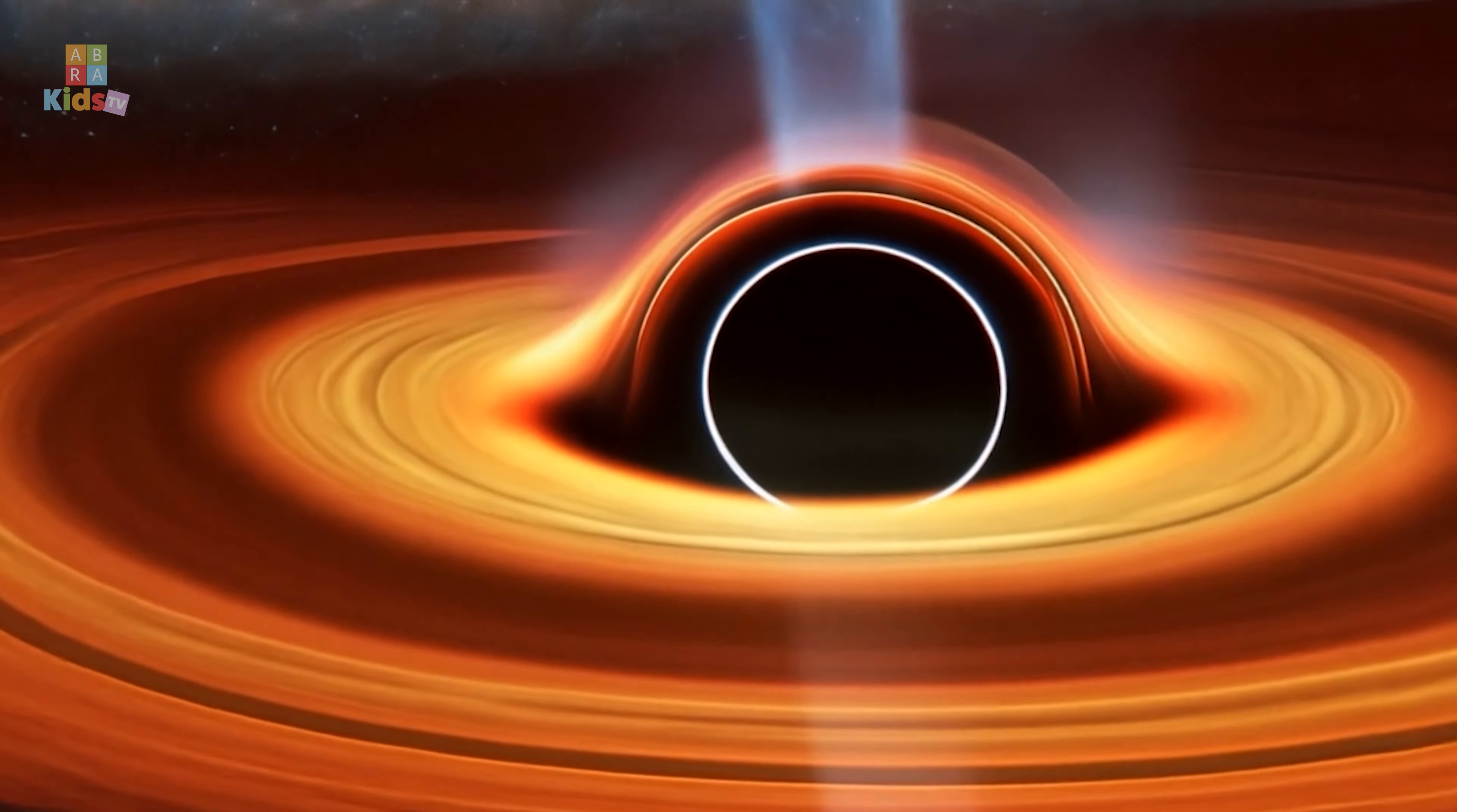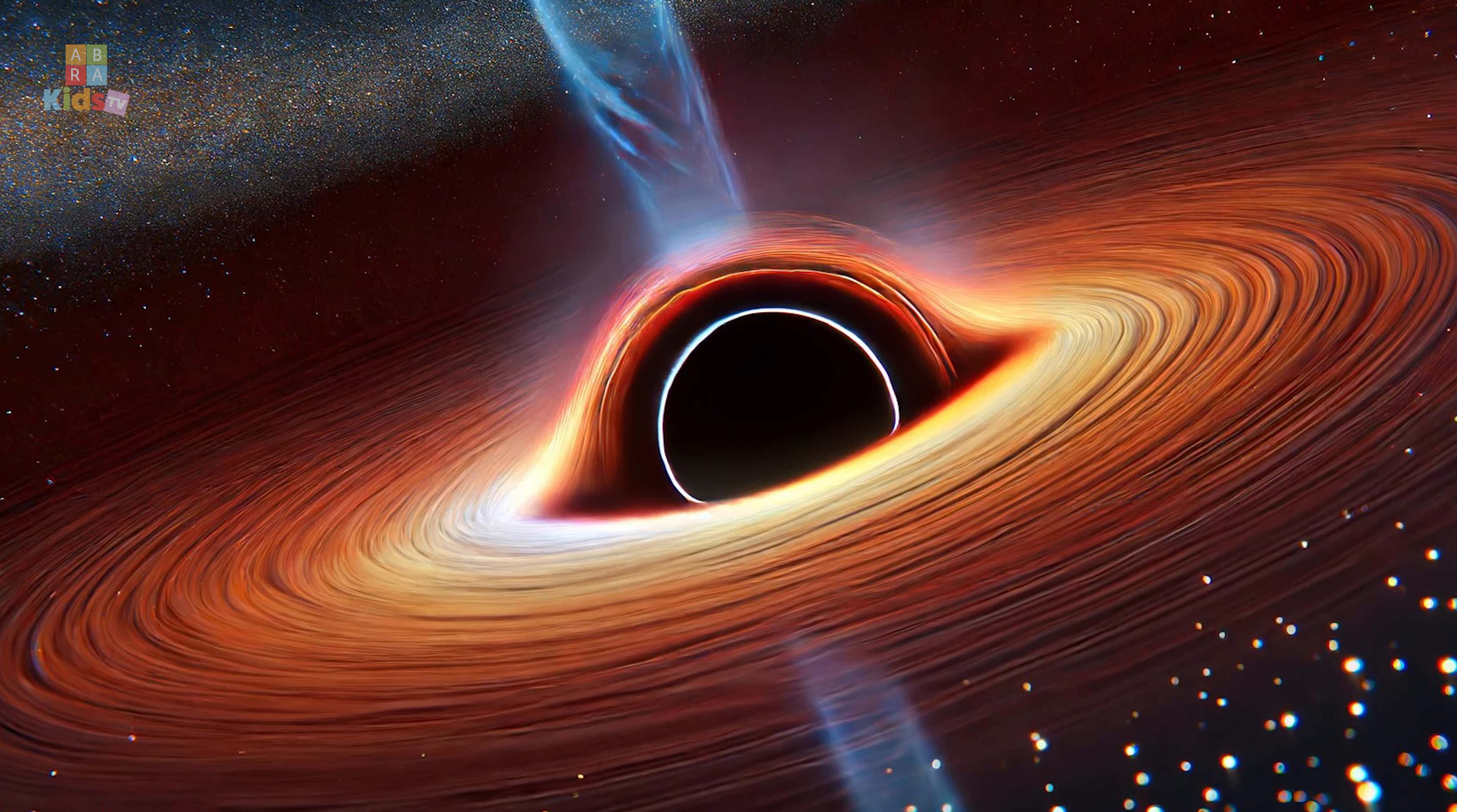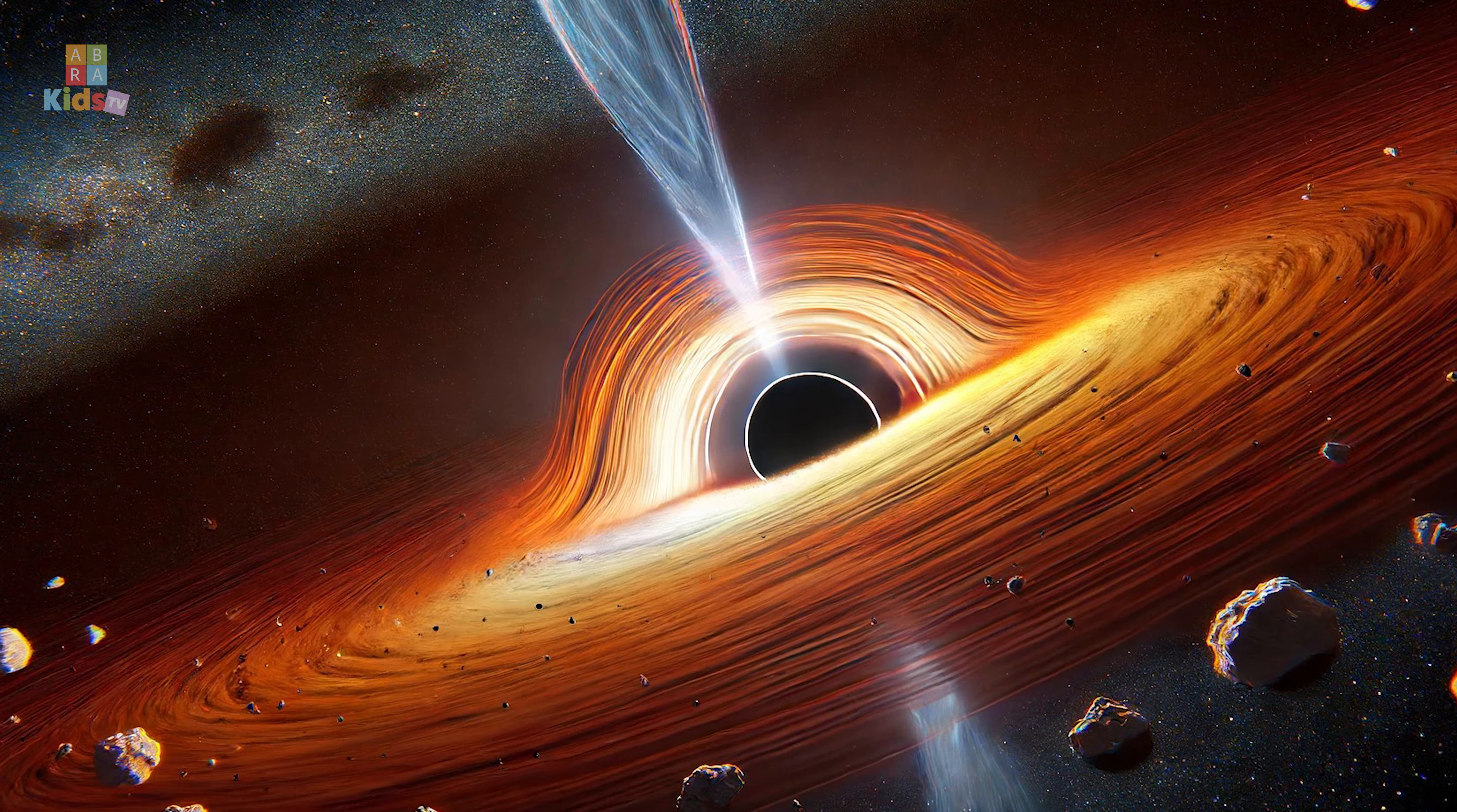The event horizon is the boundary around a black hole beyond which nothing can return. It's often described as the point of no return. Once an object crosses this threshold, it is inevitably pulled towards the singularity.